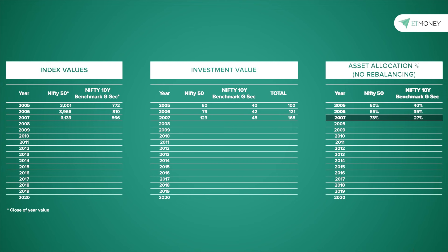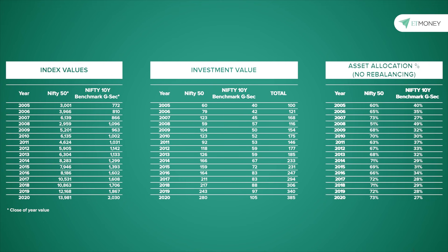More importantly, this 73-27 split meant that our portfolio had acquired a lot more risk than what you might be comfortable with. When we extend this table all the way until 2020, we observed that barring the year 2008 when equities took a huge dent, in all other years the equity proportion of our simulation portfolio was always higher than the targeted 60% allocation. That's because equities tend to perform better over bonds over the long run, and by not rebalancing one's portfolio, there is every likelihood that the portfolio will start tending more and more towards equities.